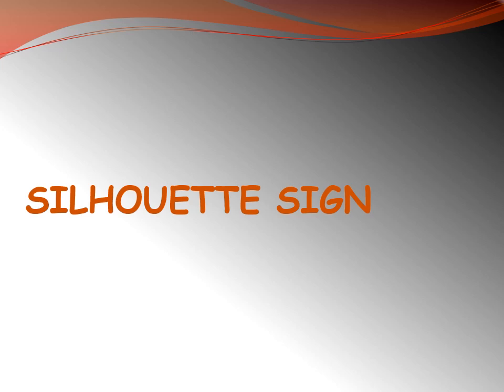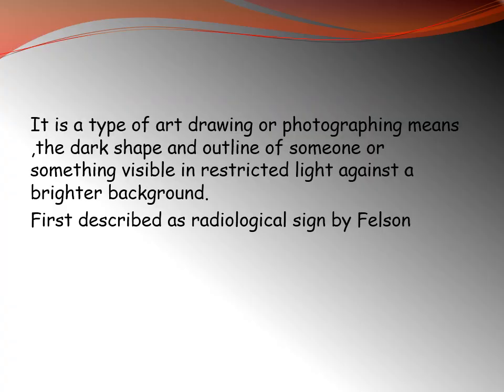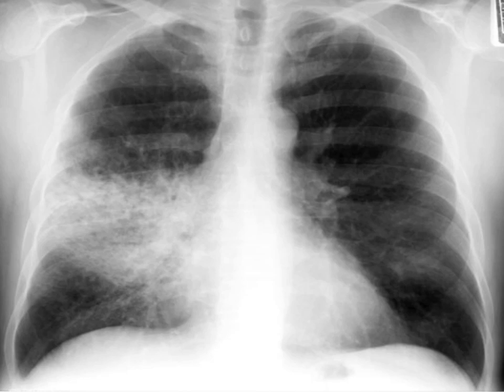First, the silhouette sign. A silhouette is a dark shape or outline of someone or something visible in restricted light against a brighter background — it depends on contrast of solid colors. First described as a radiological sign by Felson. In radiology, it means non-visualization of the border of an anatomical structure that is normally visualized, due to the area neighboring this margin being filled with tissue or material of the same density. The only importance of the silhouette sign is to indicate the localization of the lesion.